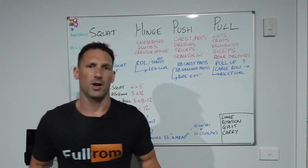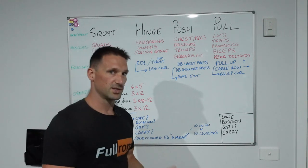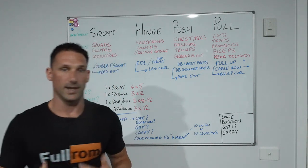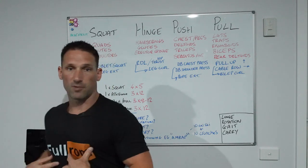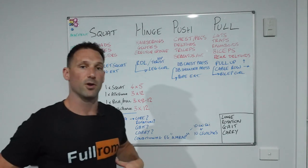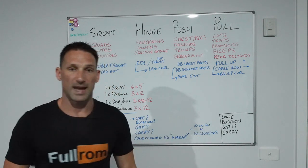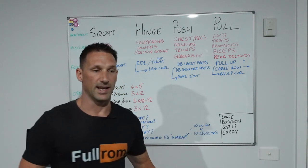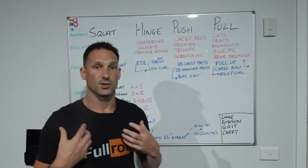A lunge is a dynamic movement — moving forward or to the side, striding onto one leg one way or the other. Rotation means we need to be able to rotate through the torso, training the muscles of the core and lower back. Gait is your walk or run pattern. And carry — we can carry things in a number of ways to train the hips and spine to be stronger.